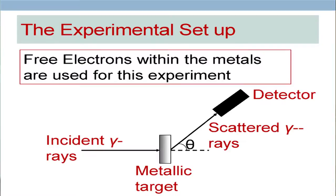Now, we come to the experimental setup. There is always a gap between how theoreticians think and how the experiment has to be done. It is very easy to say theoretically: put an electron at rest and let the photon come and hit it. But where do you get a laboratory electron which is at rest? And where do you get an electron which is free and not bound?